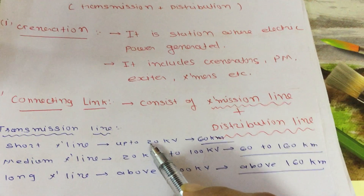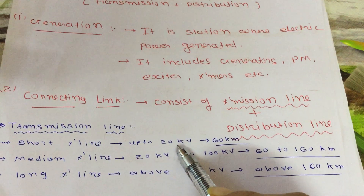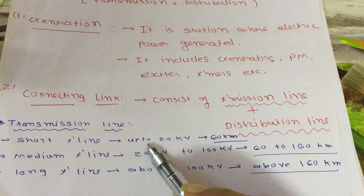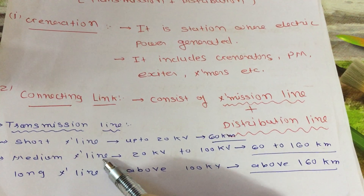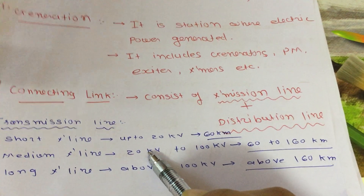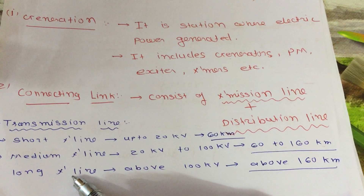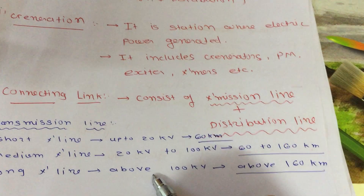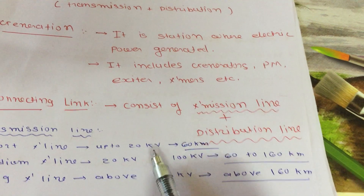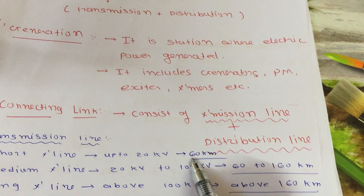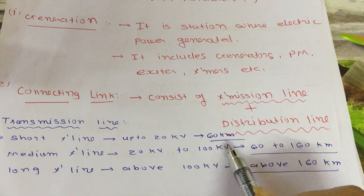If we classify by voltage rating: short transmission line is used for voltage up to 20 KV; medium transmission line is used for voltage between 20 KV to 100 KV; and long transmission line is used for voltage above 100 KV.